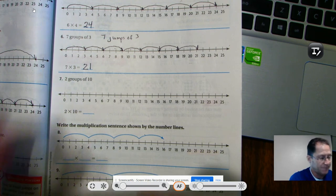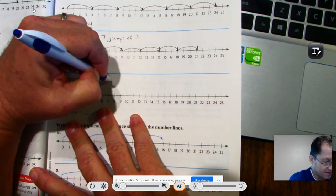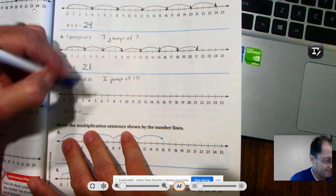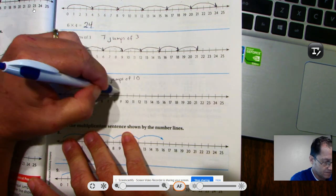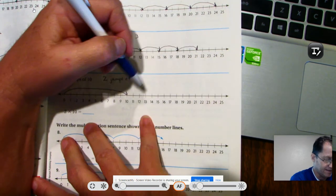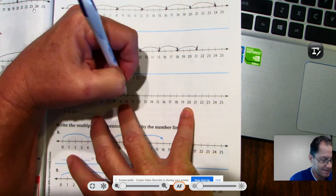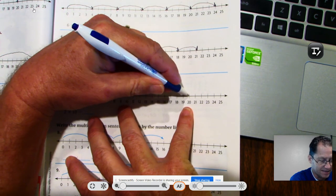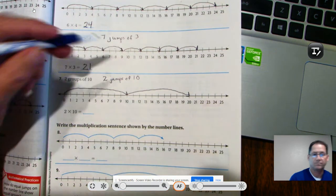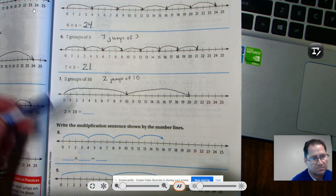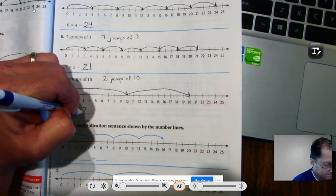2 groups of 10. Again, that's the same thing as saying 2 jumps of 10. So 0 to 10, and then another 10: one, two, three, four, five, six, seven, eight, nine, ten. I'm sure you knew that 10 plus 10 is 20. We're practicing this. So 2 sets of 10 is 20.